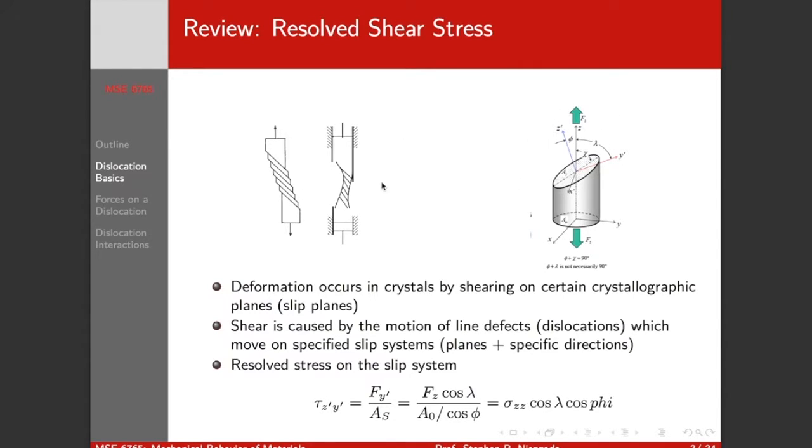So that gives us a traction vector, and then we project that traction vector along the slip direction. And that gives us a scalar force, the dot product of the traction vector with the slip direction.